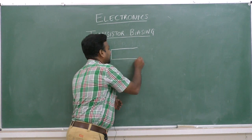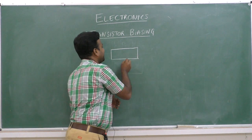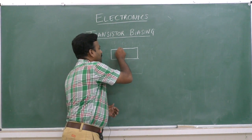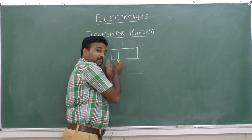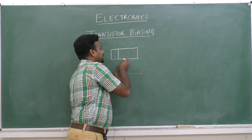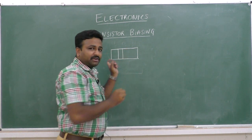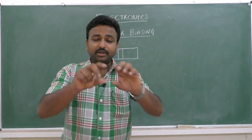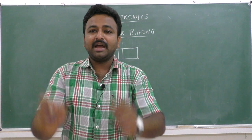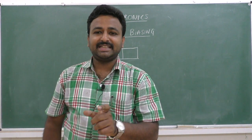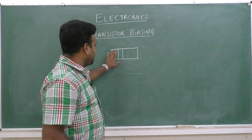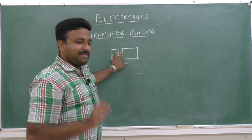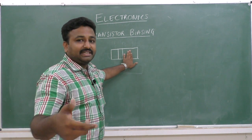To construct an NPN transistor, an intrinsic semiconductor crystal is taken and divided into three parts: one moderate-sized region, one small or narrow-sized region, and one large-sized region. So this crystal is made with three distinct regions: one moderate-sized, one narrow-sized, and one large-sized region.